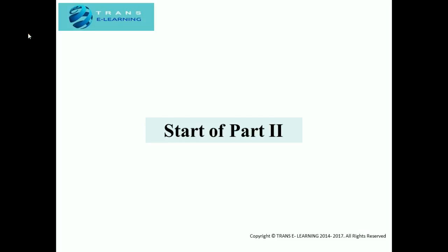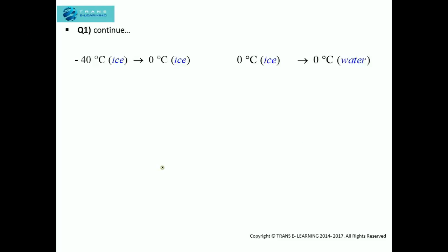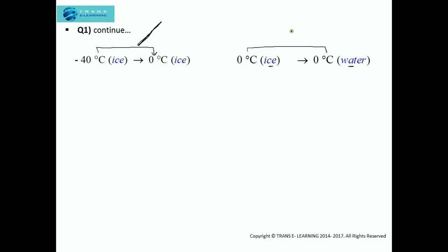Part 2 starts from here. Before plotting the graph, two important things: whenever there is a rise in temperature, I will be drawing a slope, which represents rise in temperature. And whenever there is no rise in temperature and only the state is changing, I will draw a horizontal line, because the horizontal line represents a change in state but no rise in temperature.